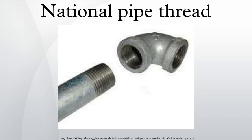NPT and NPS threads have a 60-degree included angle and have a Seller's thread form. NPTF, a semi-compatible variant called National Pipe Taper Fuel — also called dry seal American National Standard Taper Pipe Thread, defined by ANSI B1.20.3 — is designed to provide a more leak-free seal without the use of Teflon tape or other sealant compound. NPTF threads are the same basic shape but with crest and root heights adjusted for an interference fit, eliminating the spiral leakage path.